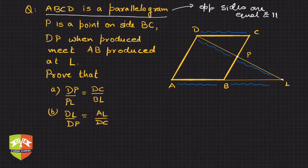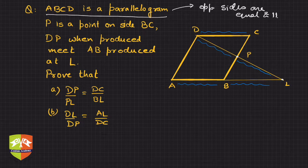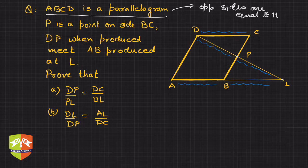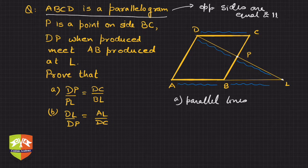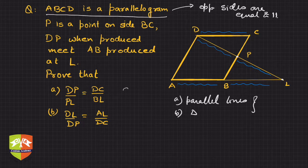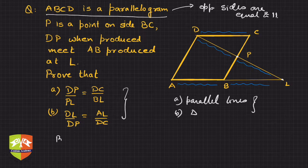The direction is very clear. The first thing which comes to our mind when we see such a problem: there are parallel lines, and there is a triangle inside a triangle — these two combinations — and we are dealing with ratios as well. This hints at using the Basic Proportionality Theorem.